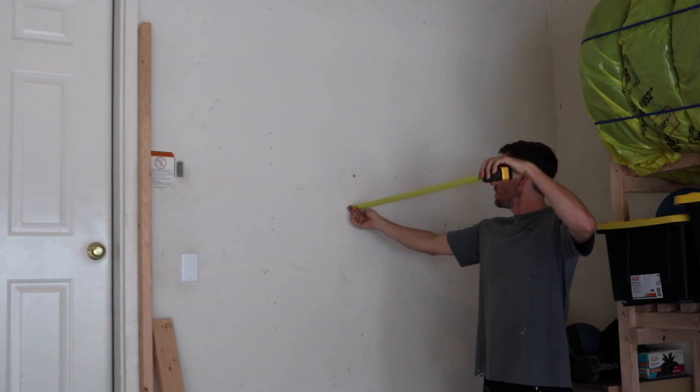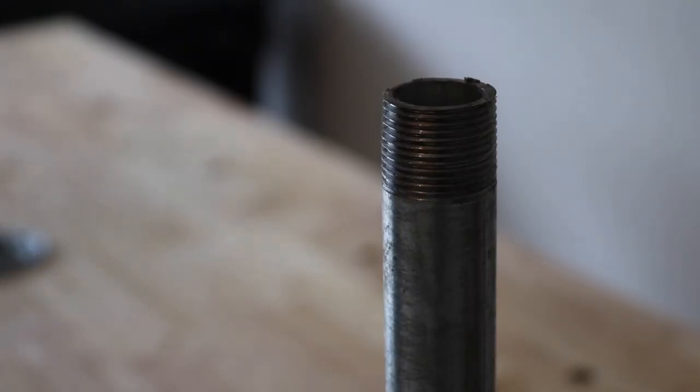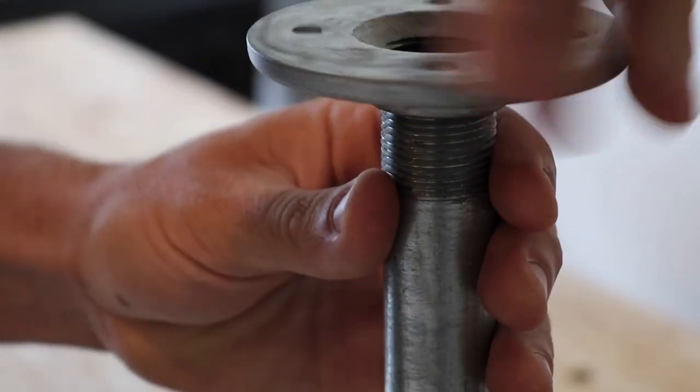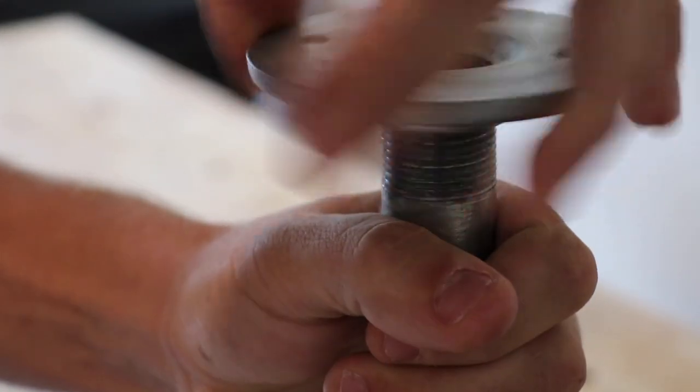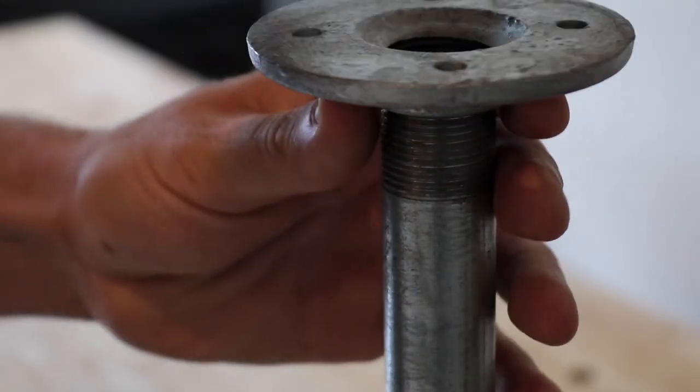And then right here I'm just checking to see how far I want that pull-up bar to sit from the wall. So I chose three feet there. And the first thing you'll do is screw these flanges onto the pipe. Make sure to get them as tight as you can.